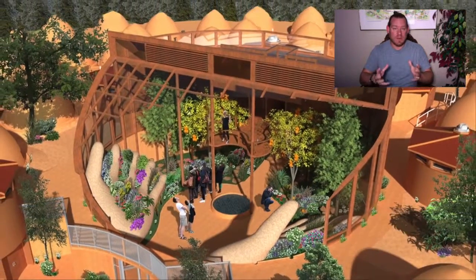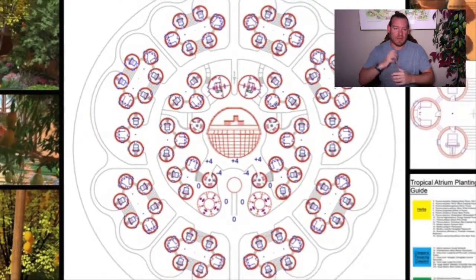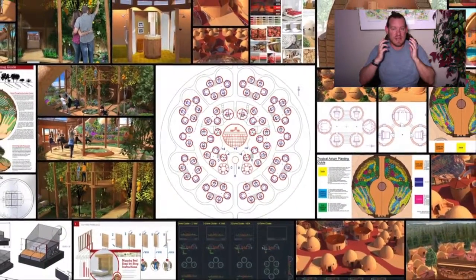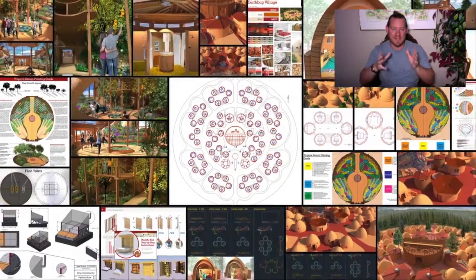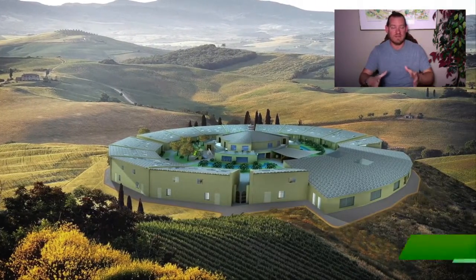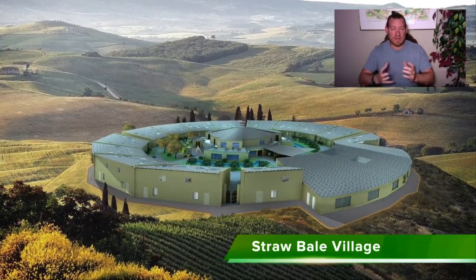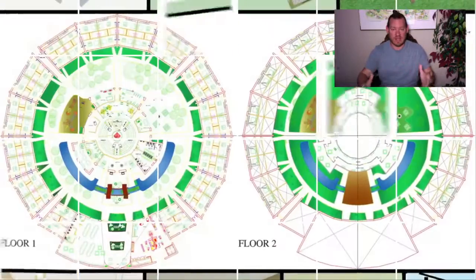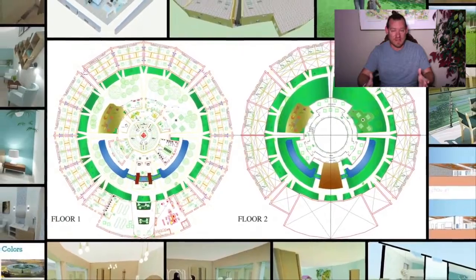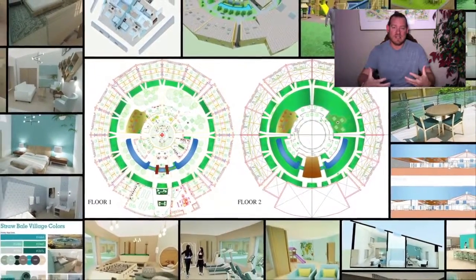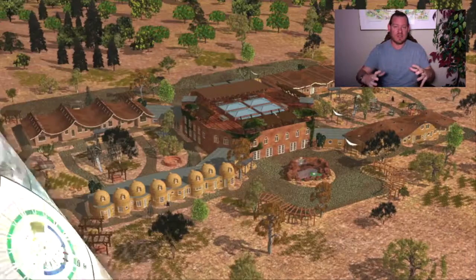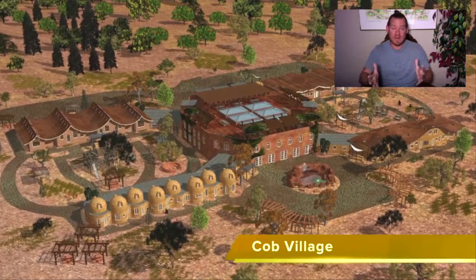We want to demonstrate maximizing sustainability evolution in one prototype location — One Community — where people can come and see the city center, stay in the earthbag village, the straw bale village, the cob village, the compressed earth block village, or the shipping container village. If they like what they experience, they can take those designs and replicate them as individual homes, or become part of maximizing sustainability evolution on a global scale by building a teacher demonstration community, village, city, or hub themselves.